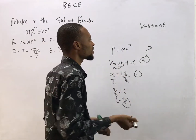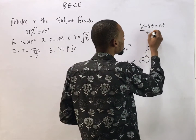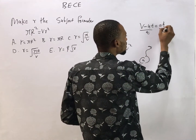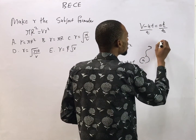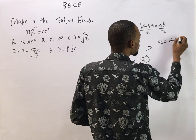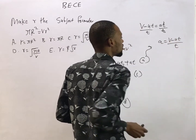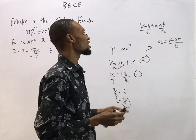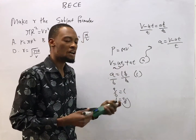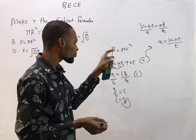Dividing both sides by t: t over t cancels, leaving a, so a equals (v minus ut) over t. With that I've made a the subject formula — I've changed the subject from v to a.